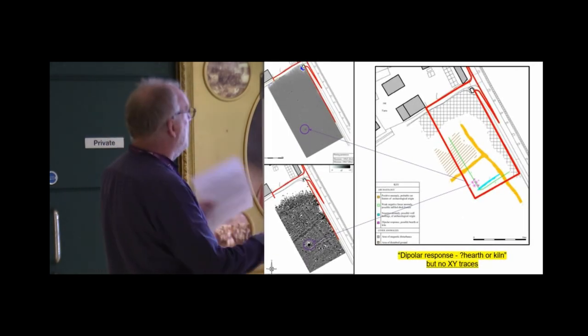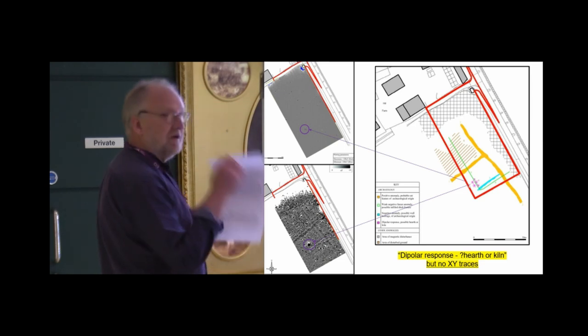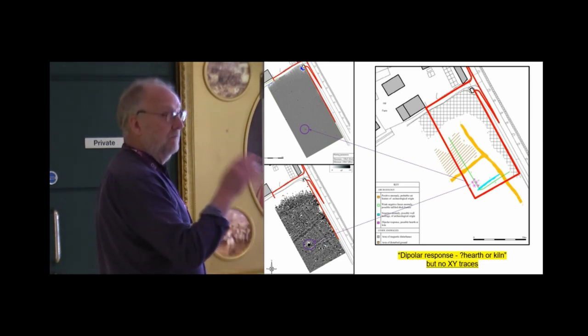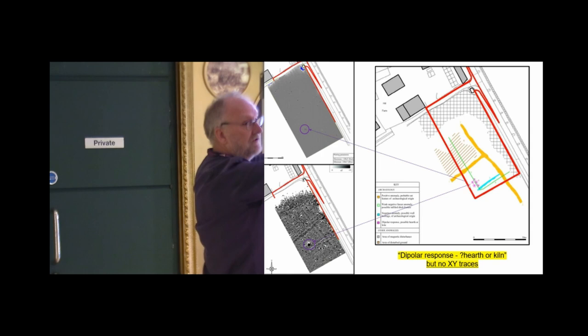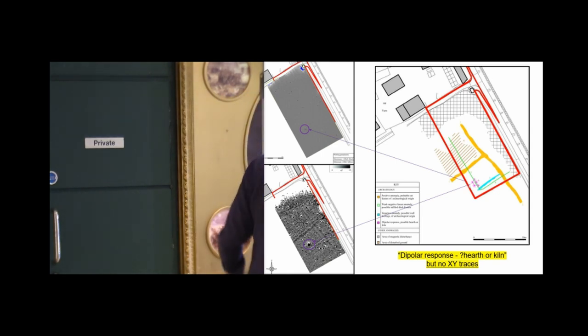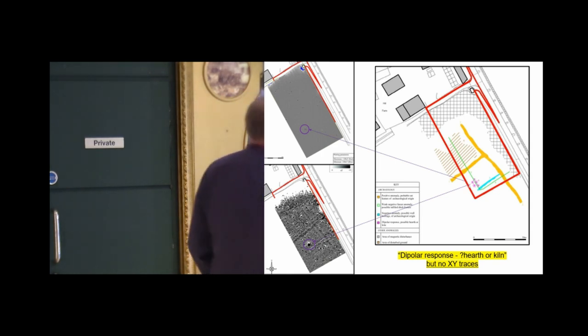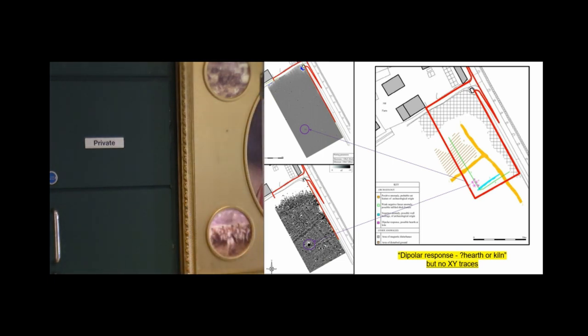Here's a classic example, a small evaluation. One of the targets was to see if there were any kilns present. So, we have a data plot, minus 100 to plus 100, looking for strong anomalies. We then go straight to minus 3 to plus 3. This anomaly is highlighted, you can just see it there, and it goes into the interpretation. And there's a discussion, could it be a hearth, or could it be a kiln? Why isn't there an XY plot? No mention of this anomaly at all.